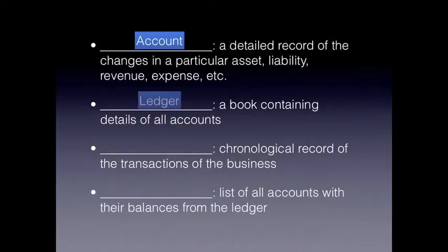The ledger is a book that contains details of all these accounts. The journal is a chronological record of the transactions of the business.